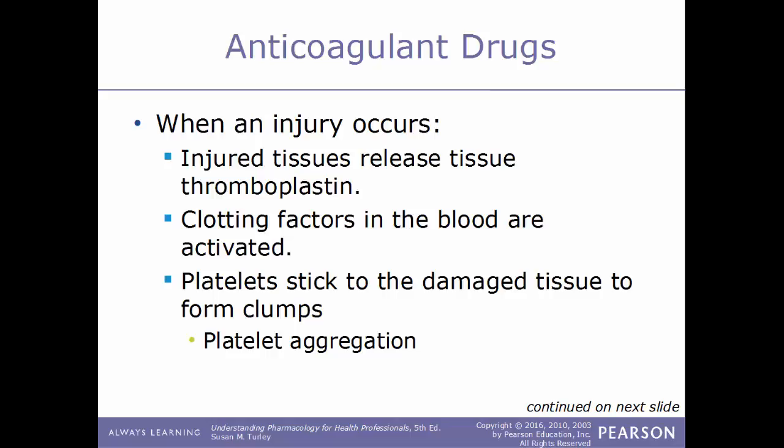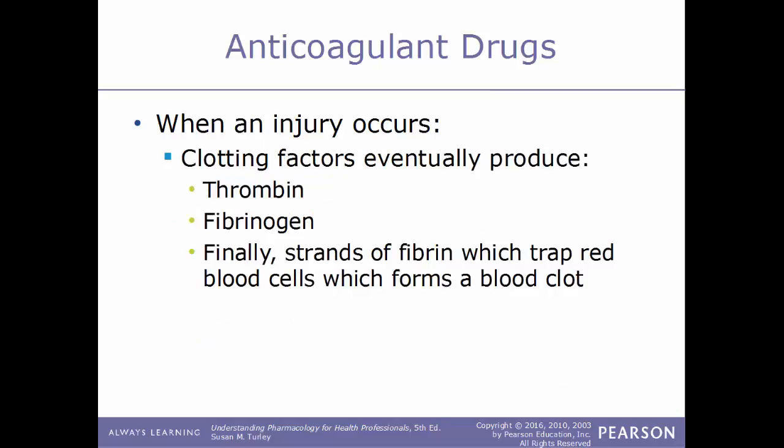When an injury occurs, the injured tissue will release thromboplastin, which will then activate the clotting factors within the blood. As this happens, platelets that are normally floating around in blood start to stick to the damaged tissues and work to form a platelet plug. That process is called platelet aggregation. The sooner these platelets clump together, the quicker blood loss can be prevented. The clotting factors will eventually produce thrombin and fibrinogen.